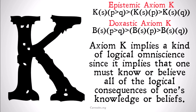Even with implicit beliefs — where you perhaps know or believe things that are quickly or easily deducible from your beliefs — it doesn't seem that that's what Axiom K is saying. It says that you know all consequences of your beliefs or knowledge, even if those consequences are not quickly deducible but rather take a long time to arrive at.